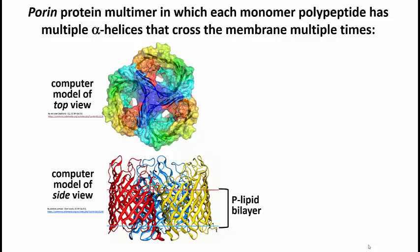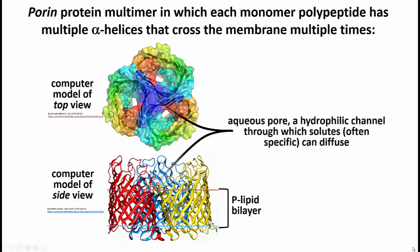Why? Because water exists in the aqueous pore in this illustration. So there are going to be amino acids in these helices that are hydrophilic, and they are the ones that are going to face the interior of the pore. So you can imagine that a hydrophobicity plot is going to be a bit more complex than what you saw in the example I gave you.